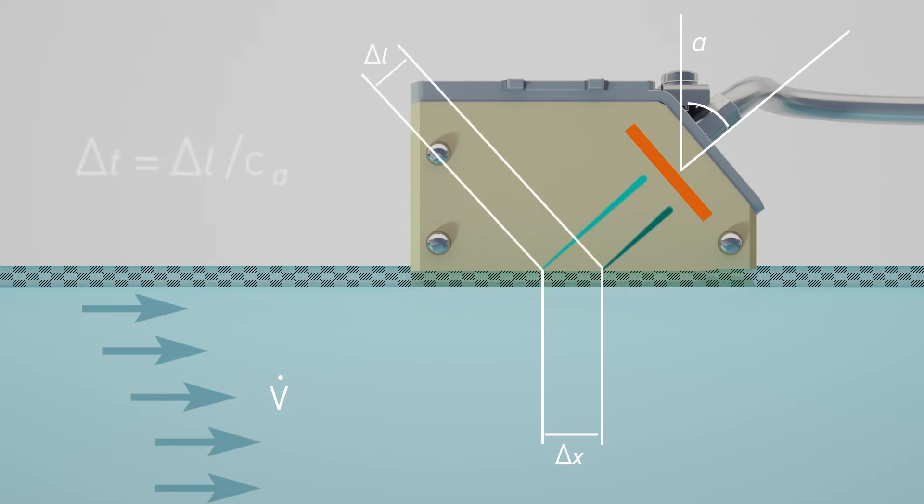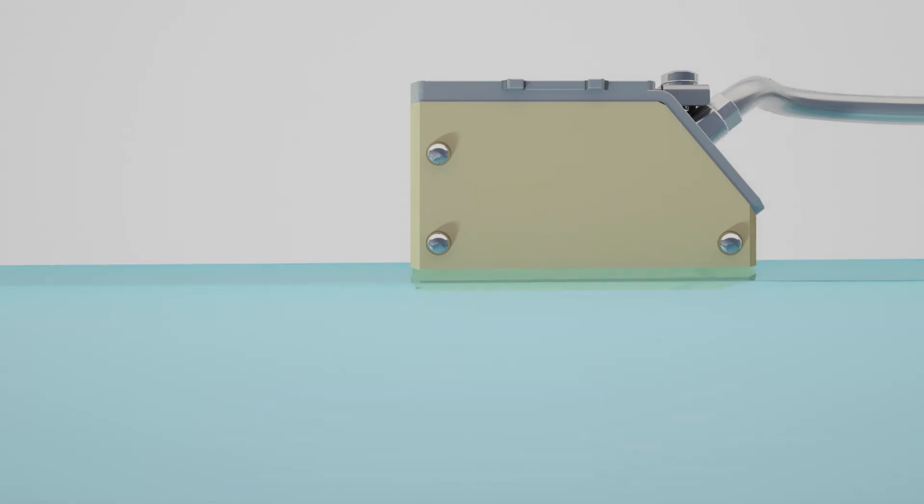This also means a decrease by delta t in the transit time according to the sound speed c-alpha of the transducer wedge. The spatial shift caused by the flow is transformed by the transducer into a time shift. This effect allows for a direct calibration of the transducers.